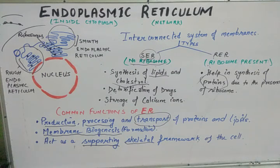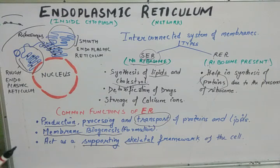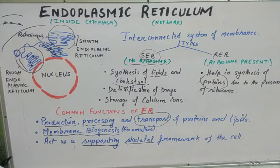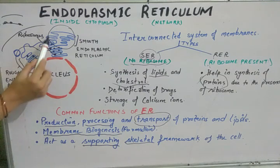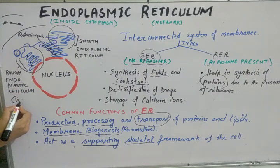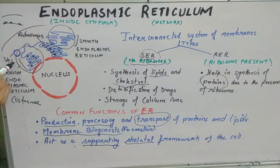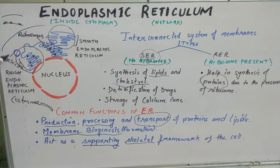Additionally, the endoplasmic reticulum also helps in the formation of a few organelles such as vacuoles, Golgi bodies, and lysosomes. Structurally, the endoplasmic reticulum is made up of tube-like structures called cisternae, and round structures called vesicles.